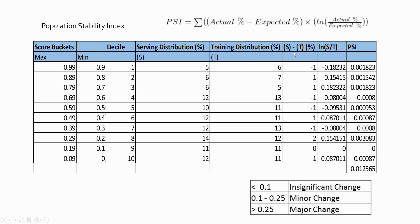To calculate PSI, first subtract the serving distribution from the training distribution for each bucket — for example, 5 minus 6 equals minus 1, 6 minus 7 equals minus 1, and so on. That gives you the actual minus expected column. Then compute the natural log of the serving-to-training ratio for each bucket — for example, ln(5/6) or ln(6/7) — to get the log column. Multiply the actual-minus-expected value by the log value for each bucket, then sum all of those products to get the final PSI value. In our example, the PSI comes out to 0.0125.